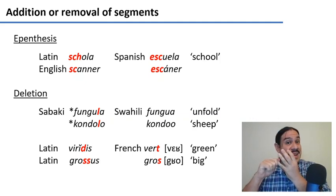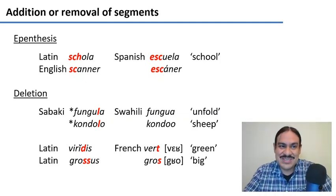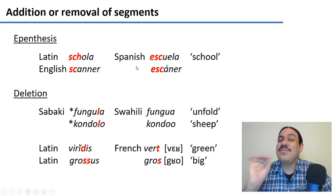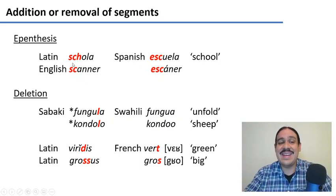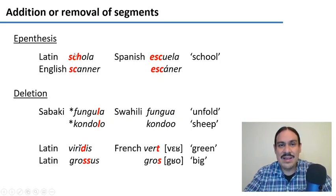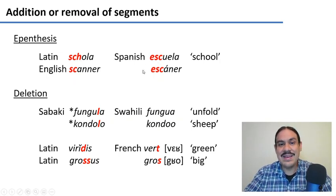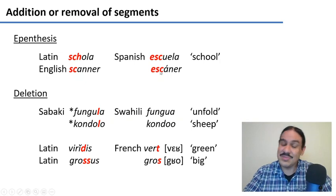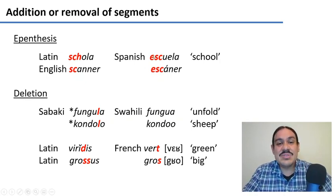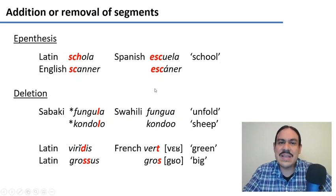We can also add or remove segments as languages change through their history. One defining feature of Spanish is that it disallows an S at the beginning of a word — it's not part of its phonotactics. So from the very beginning, with words like 'scola', to the 21st century with words like 'scanner', Spanish always adds an E at the beginning: 'escuela', 'escáner'. This process is called epenthesis — adding a segment — driven by the phonotactic requirements of Spanish.